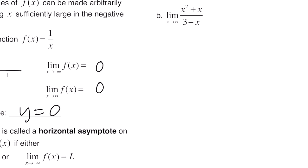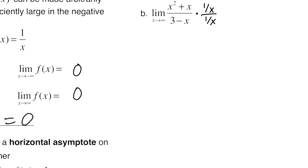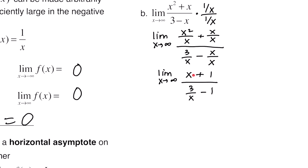Next, the limit as x goes to infinity of another rational function. We again divide numerator and denominator by the highest power in the denominator, which is x¹. Distributing 1/x: x²/x becomes x, x/x becomes 1; the denominator simplifies to a negative value. As x gets larger, the fraction term goes to 0, but the numerator x + 1 grows without bound, and dividing by a negative value gives negative infinity. The answer is negative infinity.